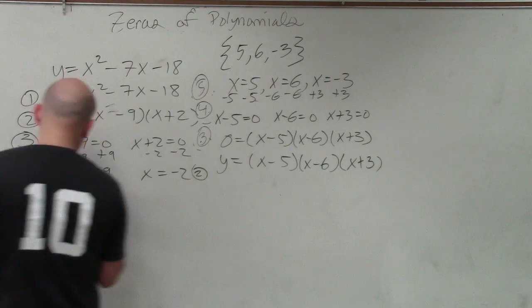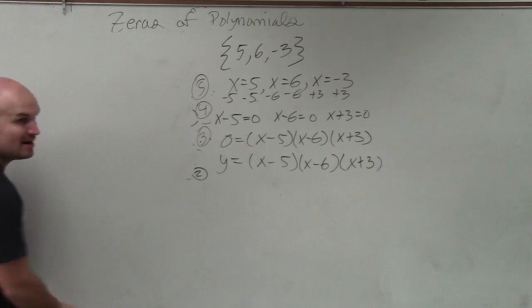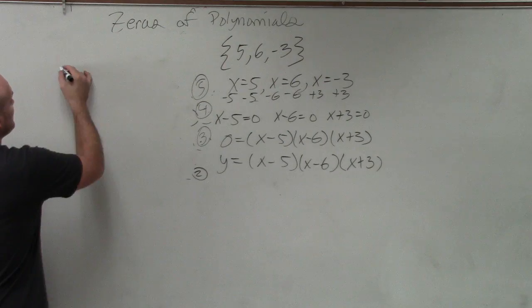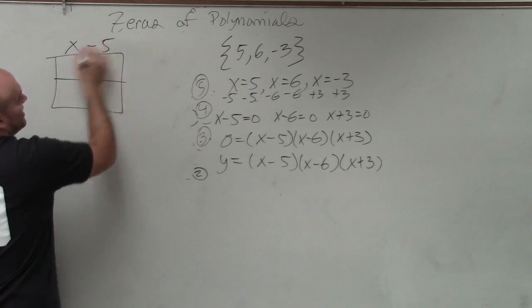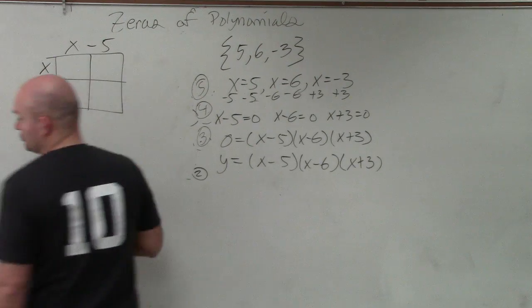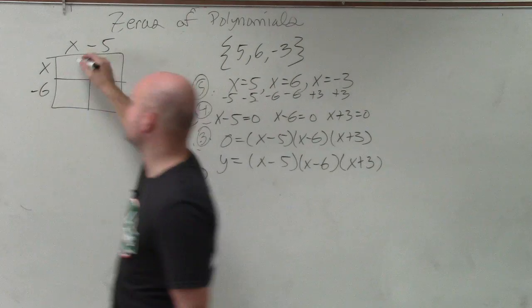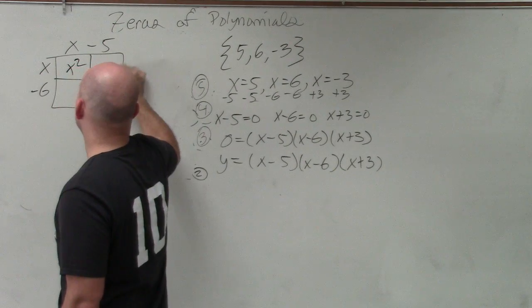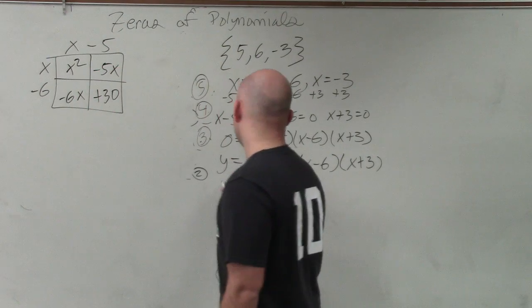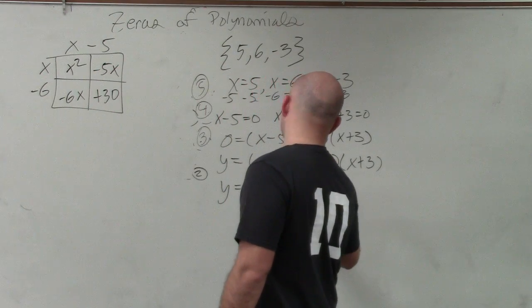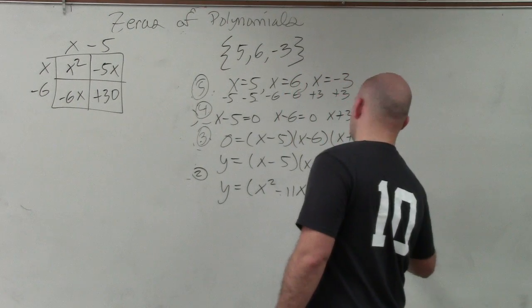Now, at the beginning of class, I showed you guys how to multiply binomial times binomial times binomial, correct? So guess what? Just pick two of them to multiply. x minus 5, x minus 6. I'm a little short on time, so I'm going to kind of go through it quickly. But I'd still recommend you have this written down. x times x is x squared, negative 5x, negative 6x, plus 30. So therefore, y equals x squared minus 11x plus 30 times x plus 3.